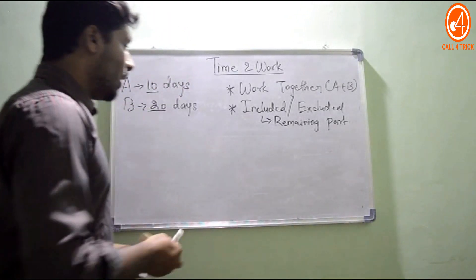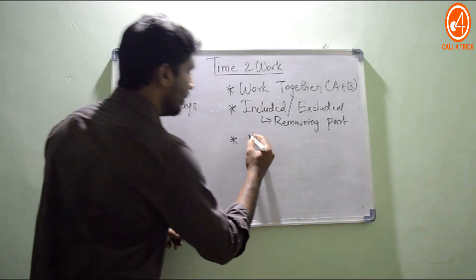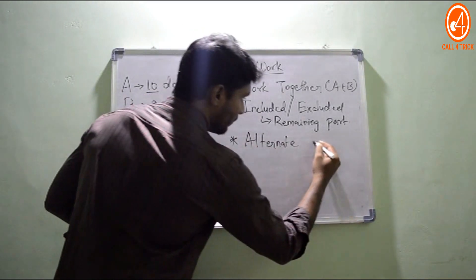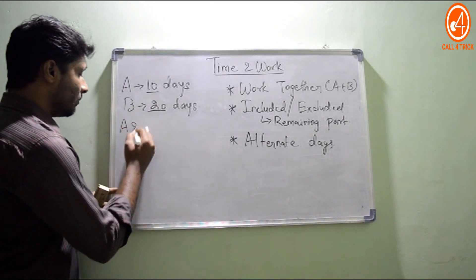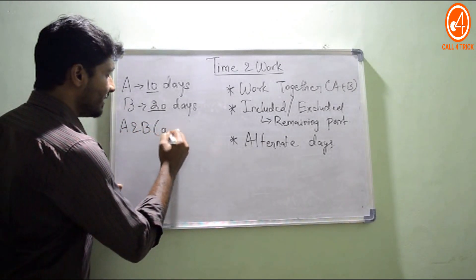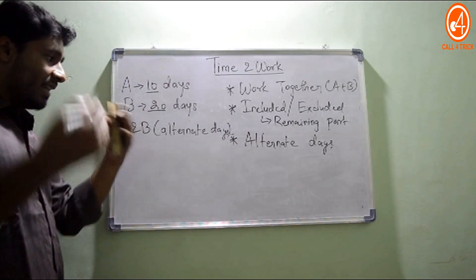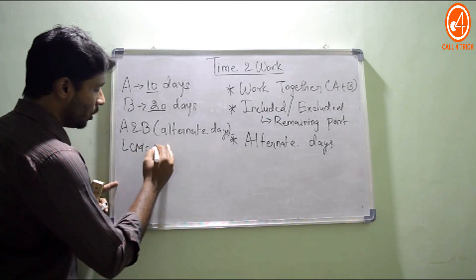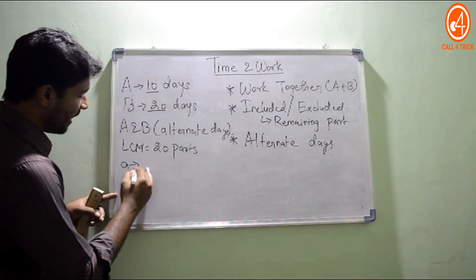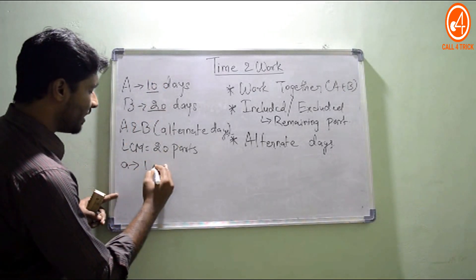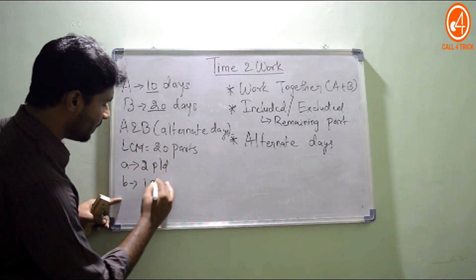Now we move to the third part — working on alternate days. Same question: A takes 10 days, B takes 20 days. A and B work together but on alternate days. What will be the answer? The same first steps apply: take the LCM, which is 20 parts total work, and find one-day work: A does 2 parts per day, B does 1 part per day.